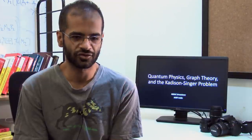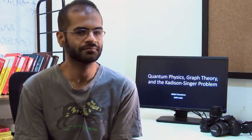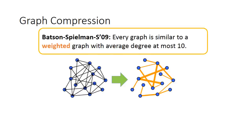The second story is in computer science, related to this problem of graph compression. A few years ago with Batson and Spielman we showed that every graph can be approximated by a sparse weighted graph.